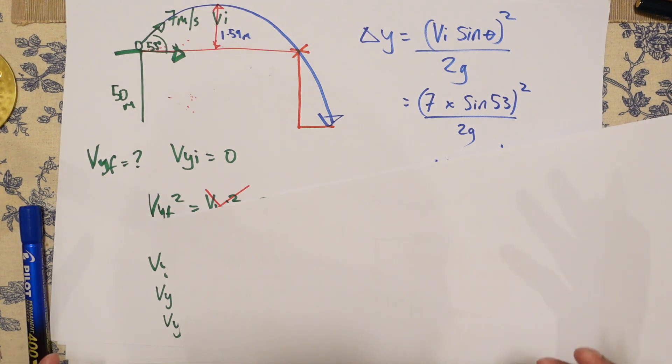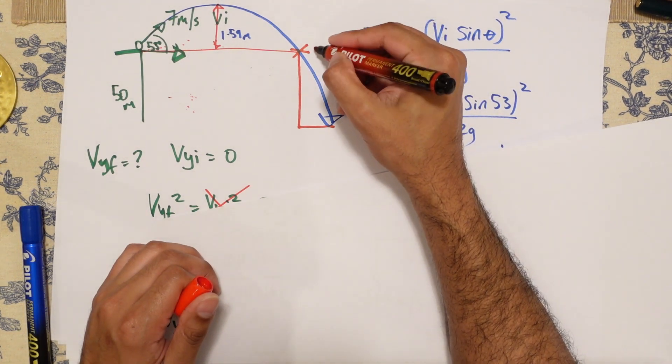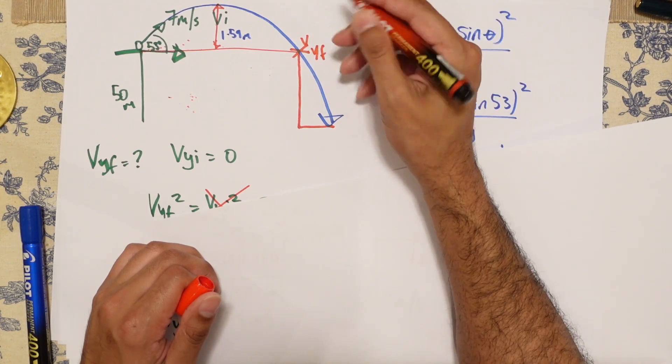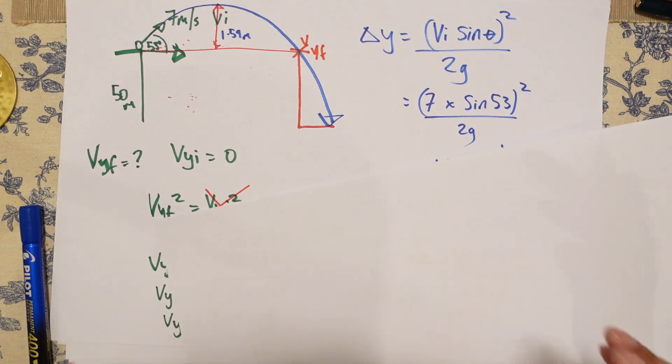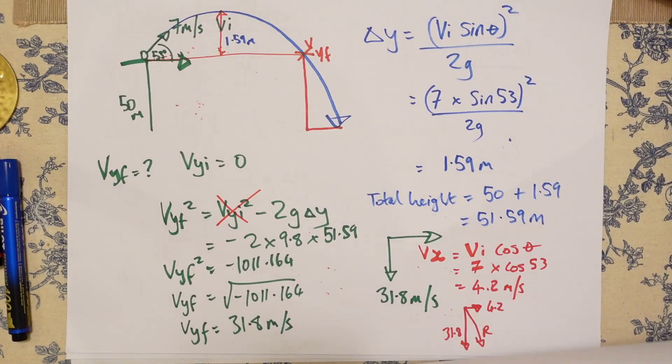And then I'm going to treat this bit over here as a separate problem. And then I'm just going to add the two bits together. So my idea here is I've got to work out what VYF is over here. And I'll basically turn into my VYI for the next bit and take it from there.